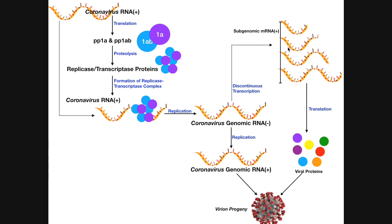Different subgenomic mRNAs are made via discontinuous transcription, these mRNAs are then translated into viral proteins, and those viral proteins are combined with the original genomic sense RNA to make the progeny.